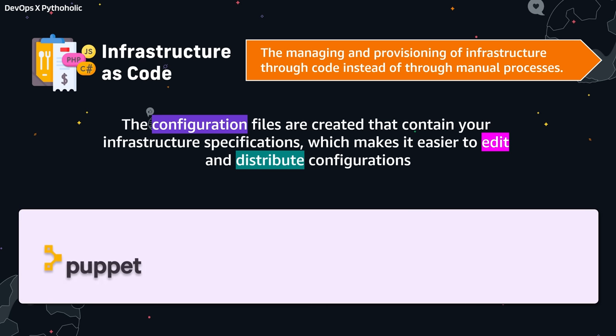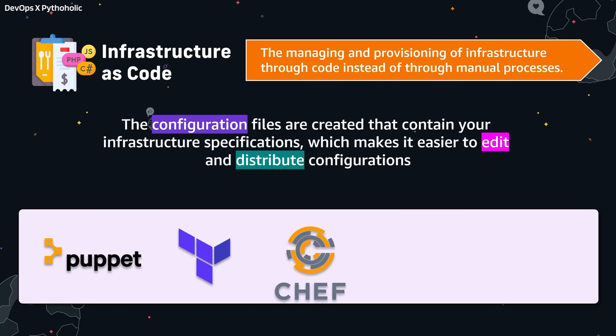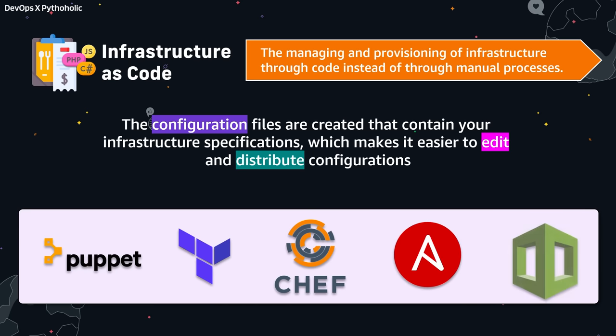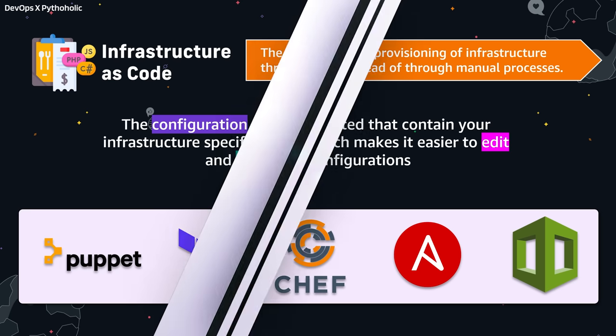Some important IaC and configuration management tools include Puppet, Chef, and Ansible, which are configuration management tools, and Terraform and CloudFormation, which are your IaC tools. You might be using other tools as well, which you can list out in the comments section.